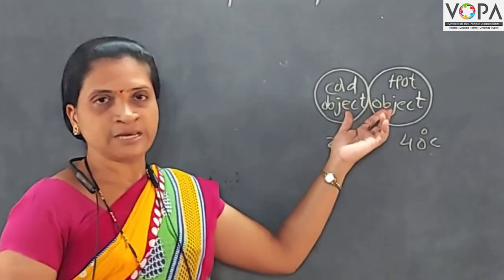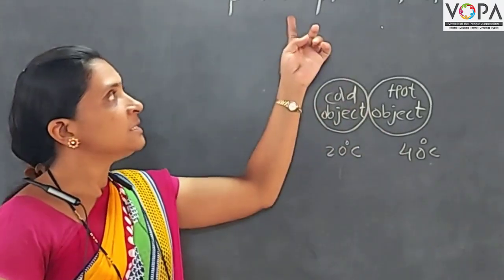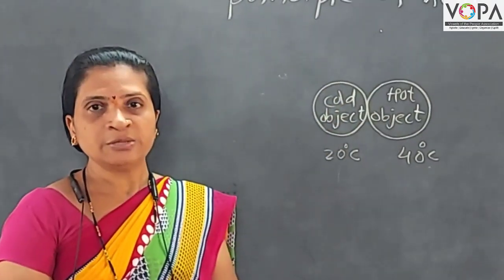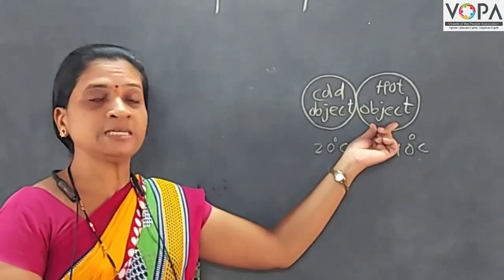And we keep these two objects near one another. Now we have to discuss principle of heat exchange. So what exactly happen here? The hot object loses its temperature.